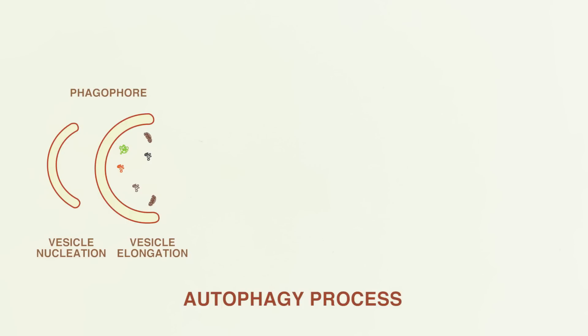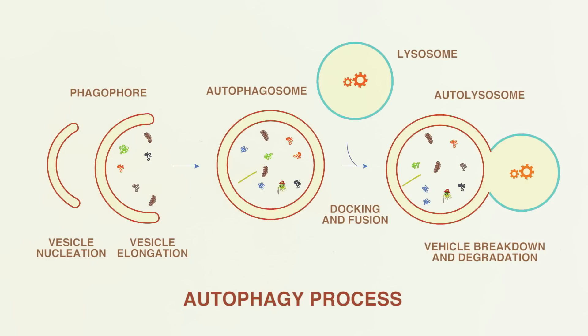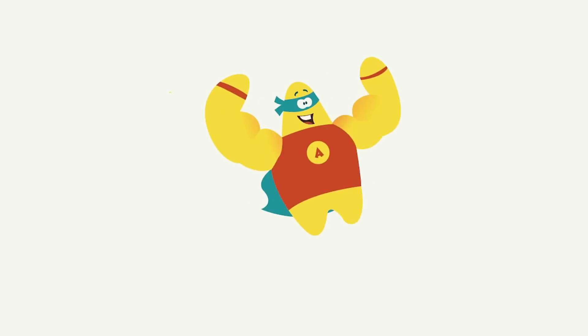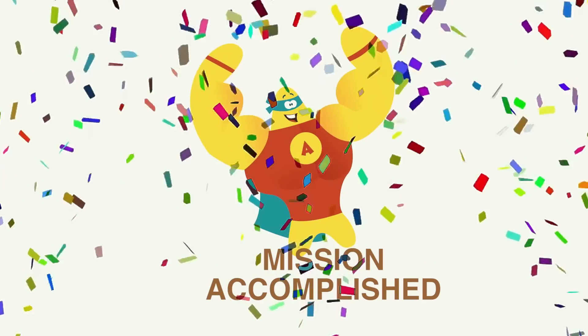As we saw, autophagy starts with vesicle nucleation leading to membrane formation and ends with the fusion of autophagosome with lysosome. Amazingly, this continuous cleansing of cells might even have the power to slow down the aging of cells.